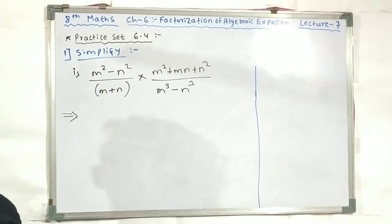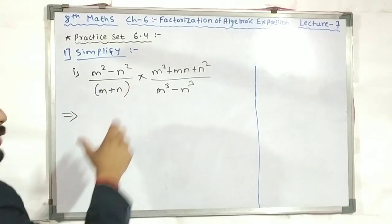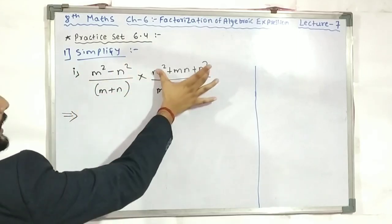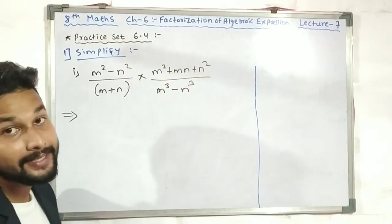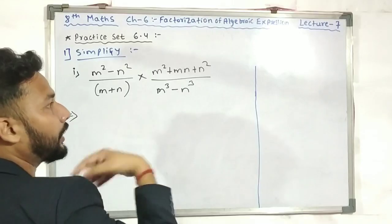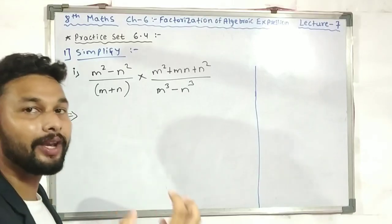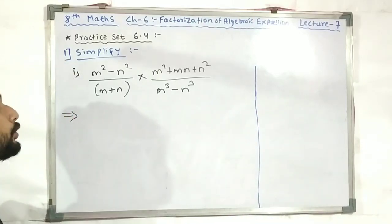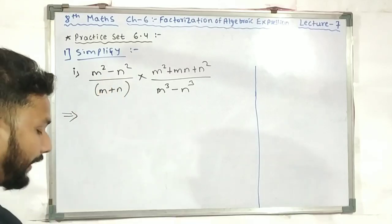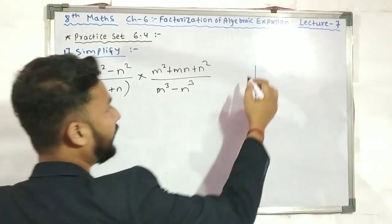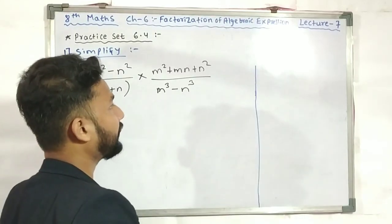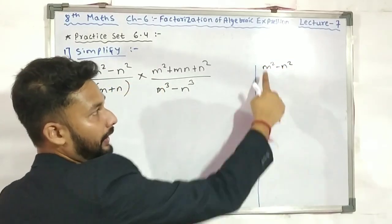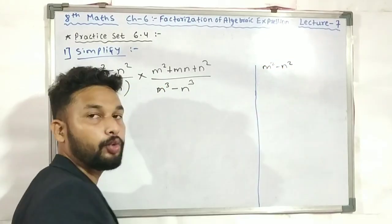First of all, this is m²-n². I will write directly here: m²-n². What does this mean? a²-b². How do you write this? We know that a²-b² equals (a+b)(a-b). So m²-n² means (m+n)(m-n). I will write m²-n² — what does this equal? Directly: (m+n)(m-n).